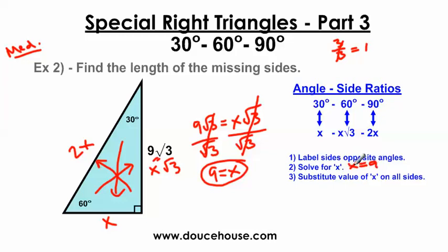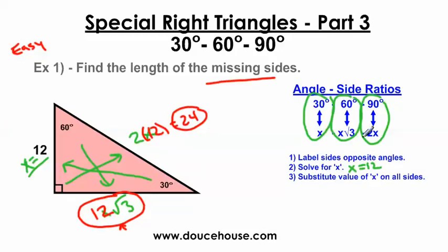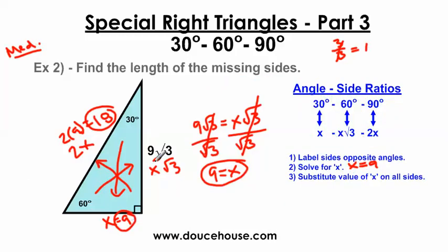Since x is 9, the short leg is 9. The long leg is 9 square root 3. And the hypotenuse is 2 times 9, which is 18. This is the same kind of problem as example 1 — example 1 gave 12, 12 square root 3, and 24; this gives 9, 9 square root 3, and 18. I just gave you a slightly different approach to the problem.